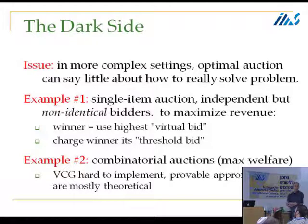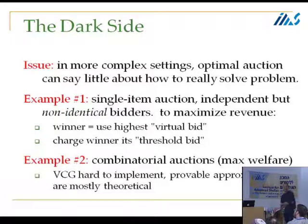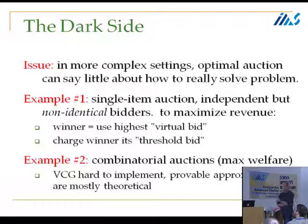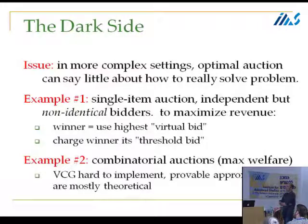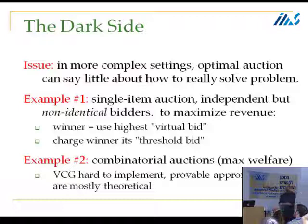Despite the fact that the space of all incentive compatible auctions is unthinkably rich, the optimal solution is obtained just at the simple Vickrey auction, possibly with a reserve. Now you make the setting a little bit more complicated along any number of axes and things get harder to interpret. With revenue maximization, a single-item auction, and non-identical but independent bidders, Myerson's theory tells us: transform bids into virtual bids, award the good to the highest virtual bidder, and charge the unique payments that give incentive compatibility.